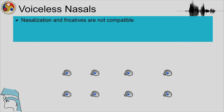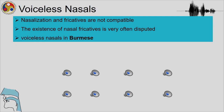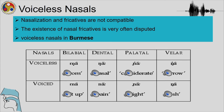Some other things to keep in mind: voiceless nasals exist, but nasalization and fricatives are not compatible. Very few nasal fricatives attested in world languages have been somewhat controversial and disputed. However, voiceless nasals are found in various languages. We hear distinctions between bilabial, dental, palatal, and velar voiceless nasals versus their voiced counterparts.